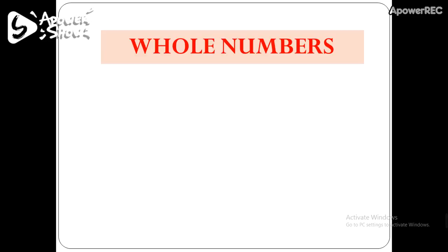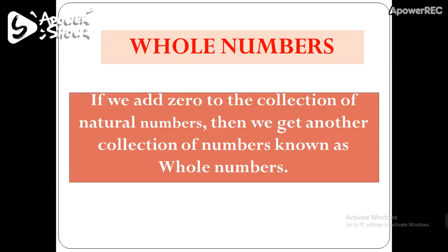Now let's move on to whole numbers. If we add 0 to the collection of natural numbers, then we get another collection of numbers, and that collection is known as whole numbers. So if we add 0 to 1, 2, 3, 4 and so on,